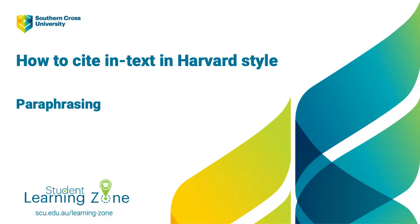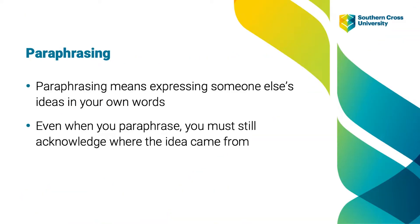Hello and welcome to this short video prepared by the learning experience team. This video will show you how to write an in-text citation for a paraphrase using Harvard referencing style. Paraphrasing means expressing someone else's ideas in your own words. When you paraphrase something, you express the original meaning of the idea used but with different words. When paraphrasing, it's very important to acknowledge where the idea came from by including a citation — this is why in-text citations are important. They allow your readers to link your main points to where the information was sourced. So let's have a look at how this is done using the Harvard referencing style.